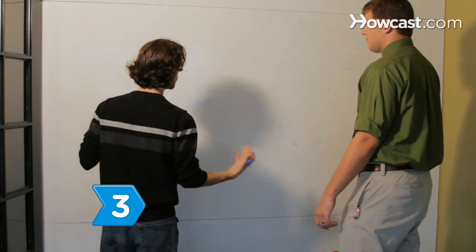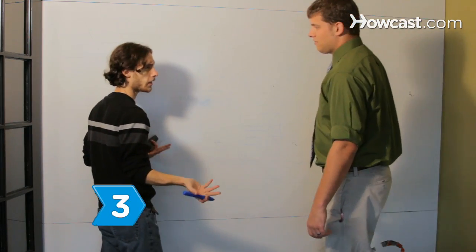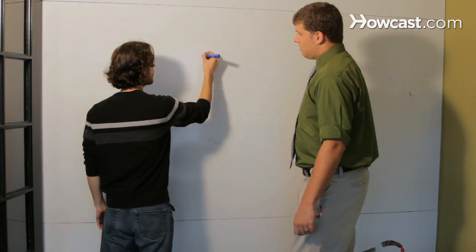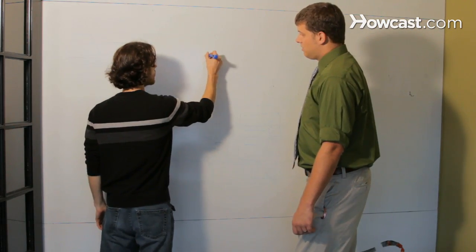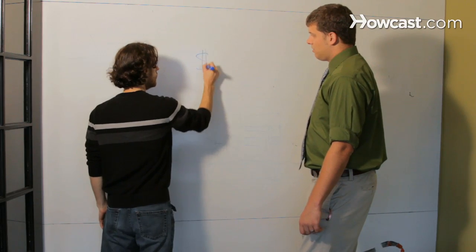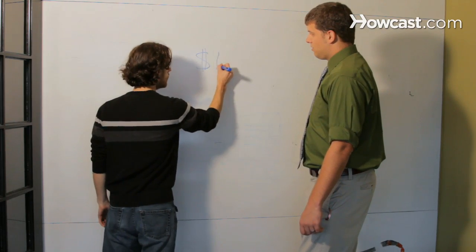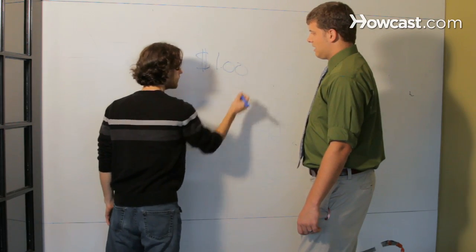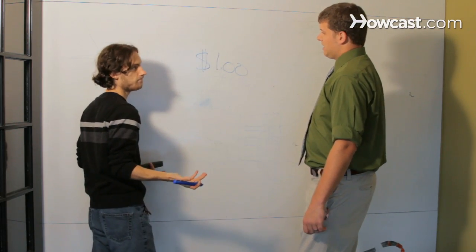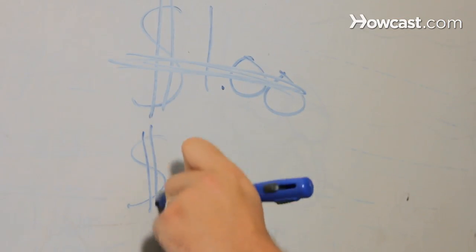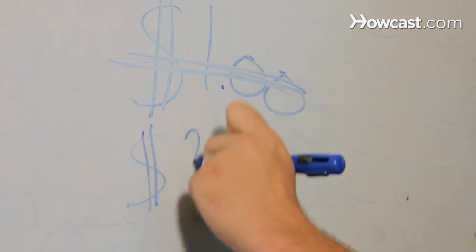Step 3. Negotiate a purchase price with the author, even if only paying an option fee for the temporary exclusive right to create and sell the script based on the literary property. After this term, the rights again revert to the author.